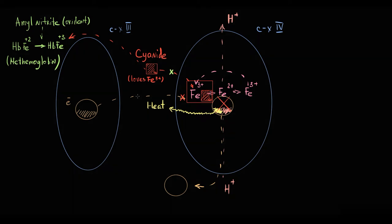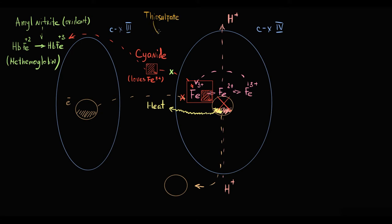The second option is thiosulfate. Thiosulfate converts cyanide to thiocyanate, thereby preventing binding of cyanide to ferric iron.